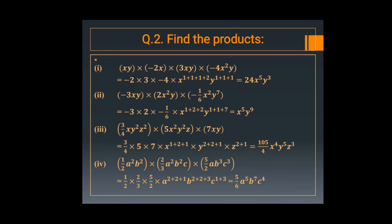Now in the next question you need to multiply 3 or 4 monomials. Here: xy multiplied by minus 2x multiplied by 3xy multiplied by minus 4x square y. The coefficient: minus 2 into 3 into minus 4 equals 24. Power of x is 1 plus 1 plus 1 plus 2, and power of y is 1 plus 1 plus 1. So the answer is 24 x raise to the power 5 y cube.